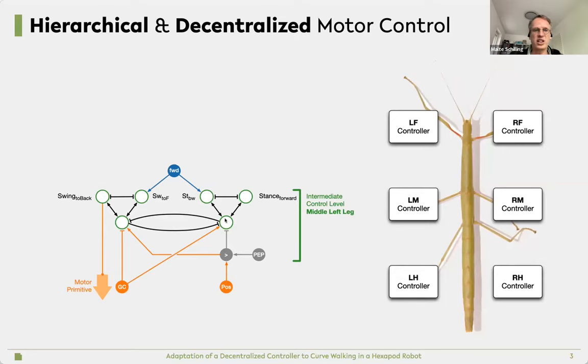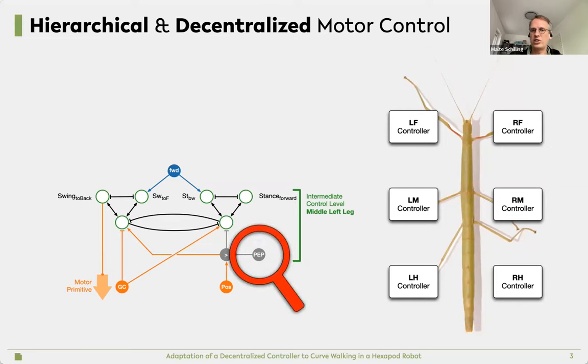If we're looking into one of these controllers, we have six of these. We have the swing part on the left and the stance part on the right. What's important is that there are inhibiting connections in between those. We have swing for different walking directions.